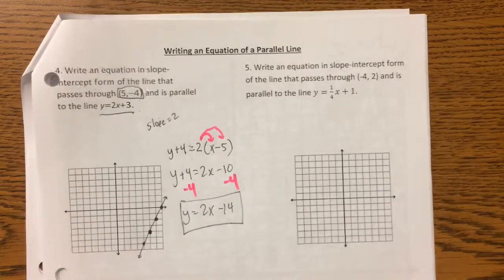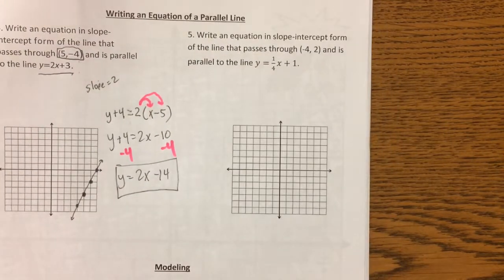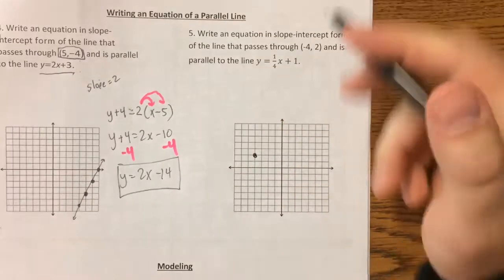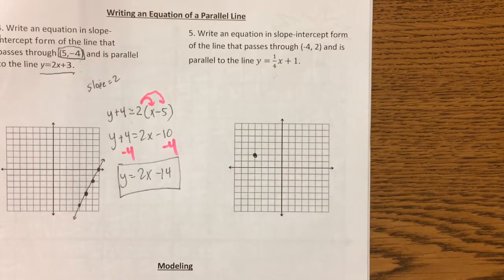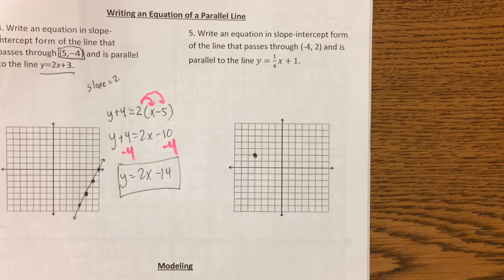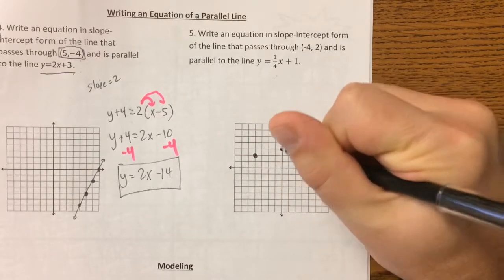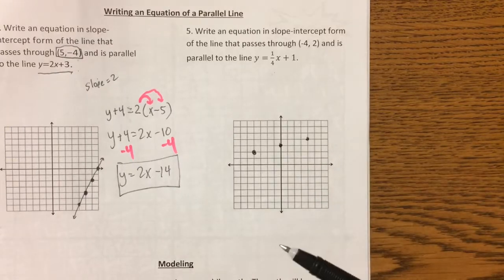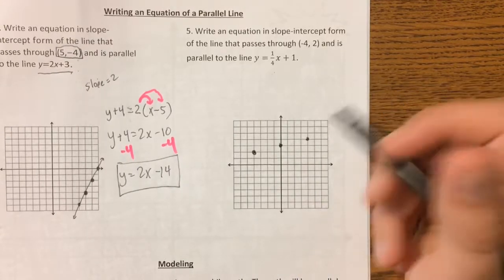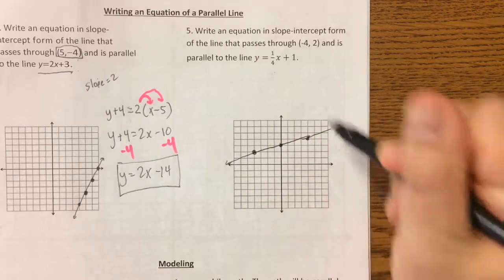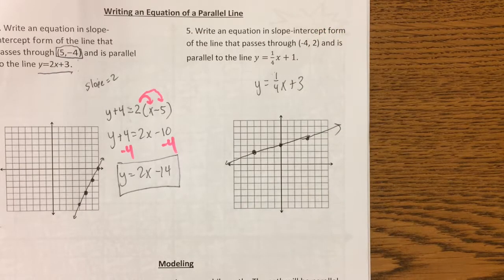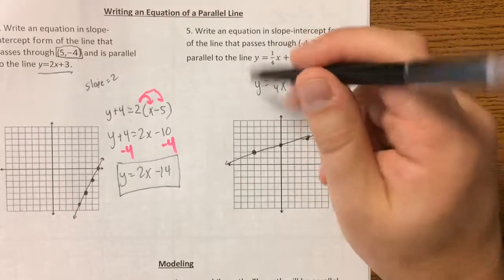Number 5 is basically the same process. The line passes through (negative 4, 2) and must be parallel to y equals one-fourth x plus 1. So the slope must be one-fourth. Plotting the point and going up 1 over 4, we can actually see the y-intercept visually — it's 3. So we can write directly: y equals one-fourth x plus 3. If you can see the y-intercept visually, you don't need to go through the full point-slope algebra.